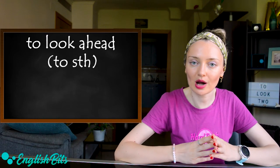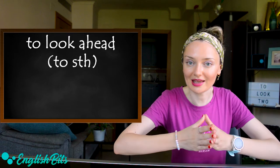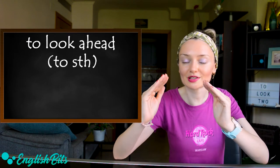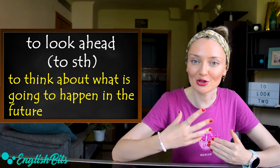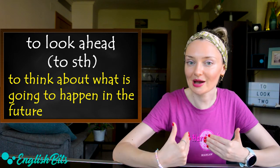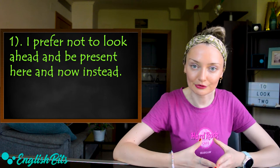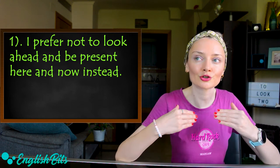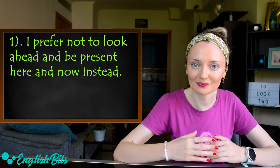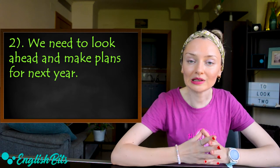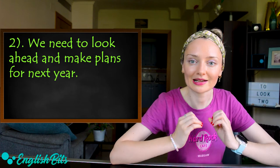And now on to our second phrasal verb, which is to look ahead to something — 'to something' is optional. It means to think about what is going to happen in the future. First example: I prefer not to look ahead and be present here and now instead. And one more example: we need to look ahead and make plans for next year.